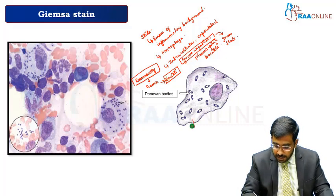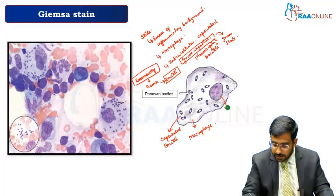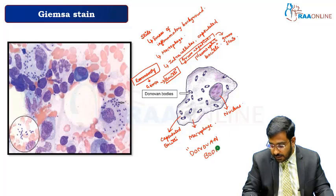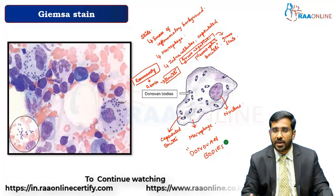Here you are able to see the particular macrophage and you are able to see capsulated bacilli, and this is the nucleus. It is going to be the Donovan body, which is seen in case of Donovanosis, which is going to be caused by an uncultivable bacteria which is the Klebsiella granulomatis. It is going to be a sexually transmitted bacterial infection.